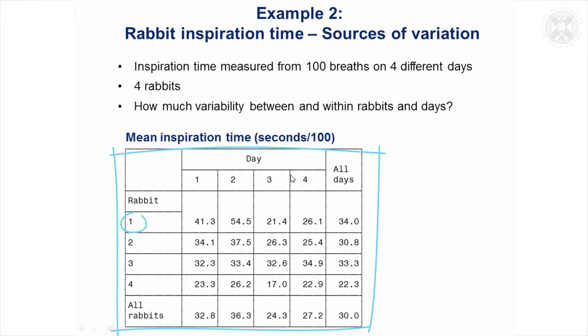If you look at one rabbit over different days, their average inspiration time varied quite a lot, which perhaps seems quite surprising. On day two, rabbit one had an inspiration time more than double than it did on day three. So obviously perhaps there were different people measuring the rabbits on different days. Something was different across the days.